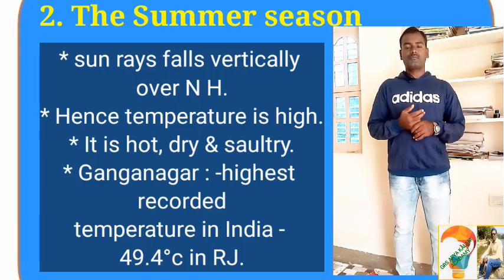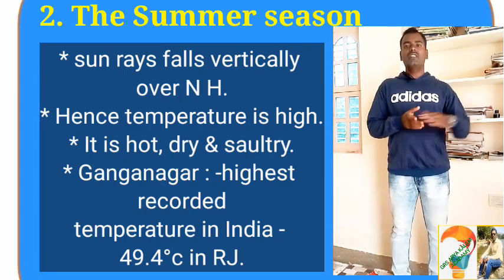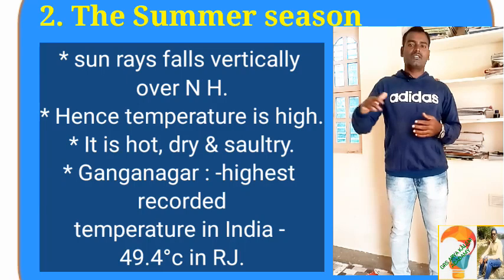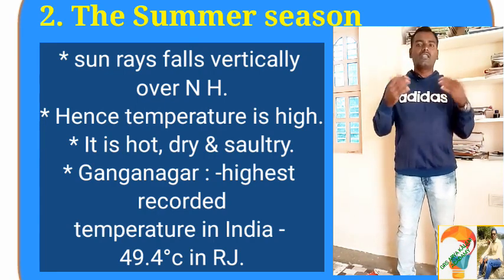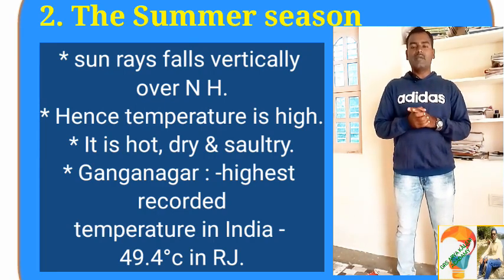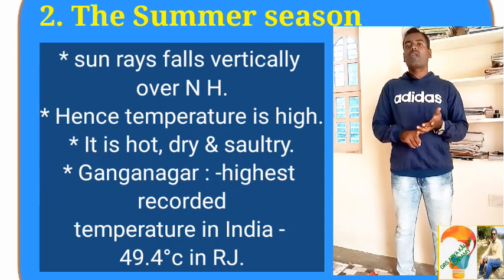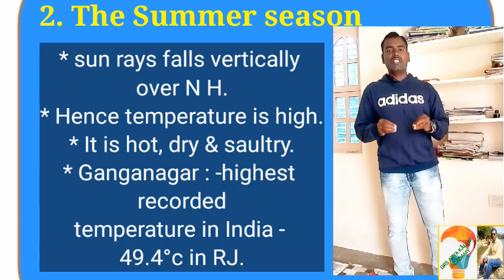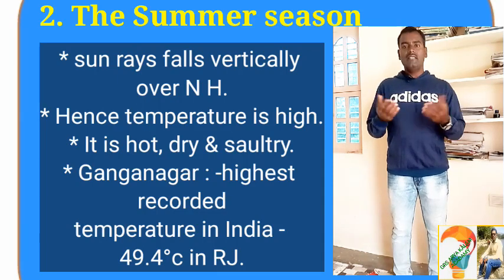The second most important Indian climatic season is the summer season. Sunrise falls vertically on the northern hemisphere, hence temperature is very high — not only in India but also in Pakistan, Afghanistan, China, Mongolia, and all other countries in the northern hemisphere. These countries experience extreme high temperatures. The summer season begins from March up to May. During these three months, temperature gradually increases all over India, and the climate is very hot and dry.